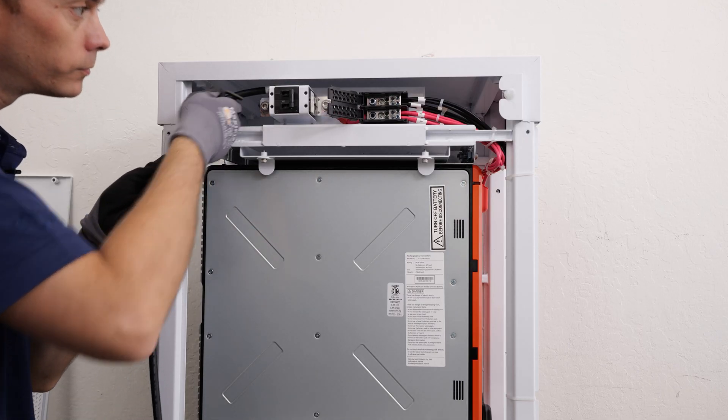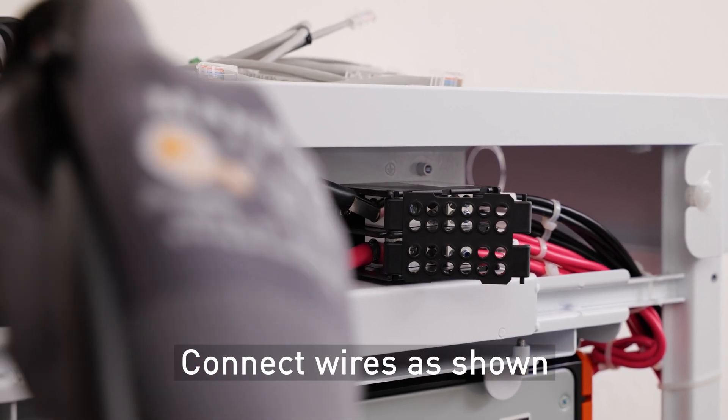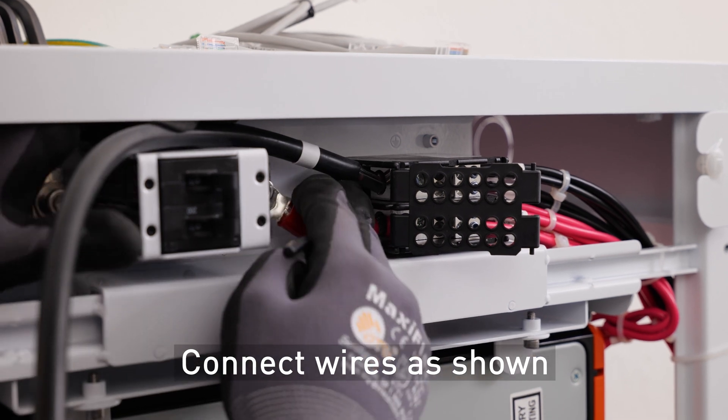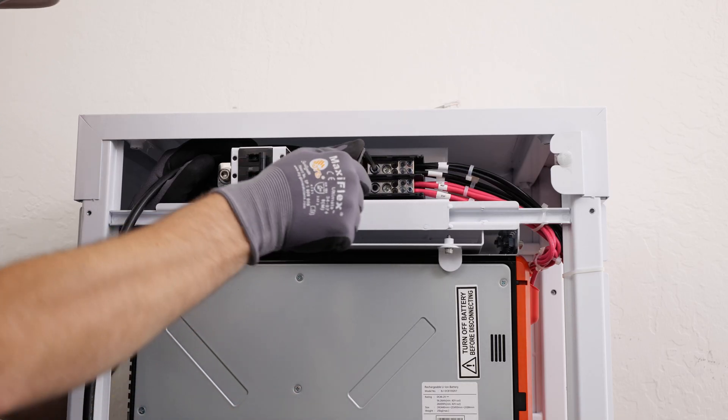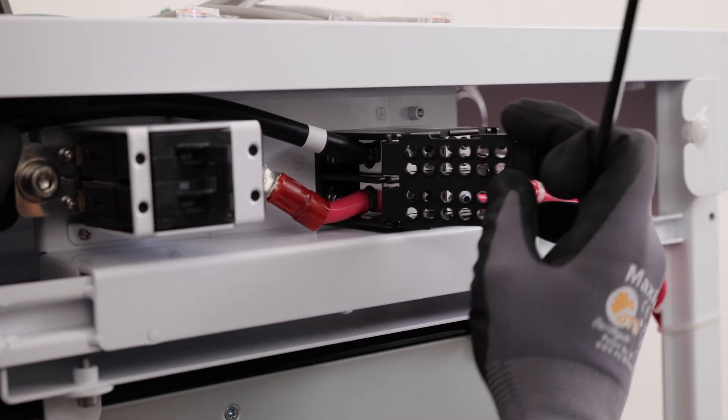Connect the appropriately sized wire between the battery terminal block and the battery breaker of the enclosure. Connect these wires as shown and set aside for connecting to the inverter. The finished wiring will look like this.